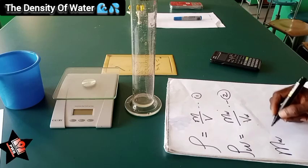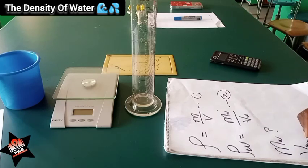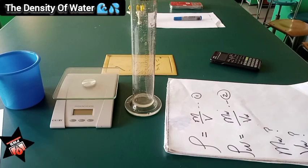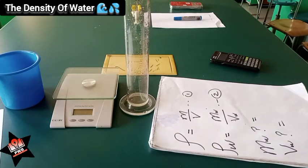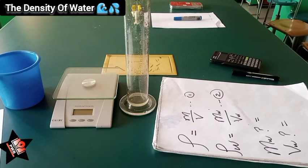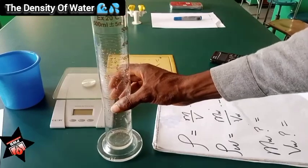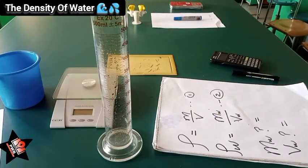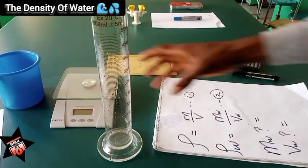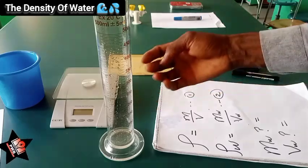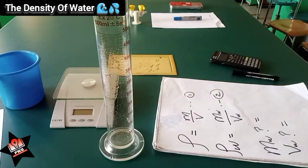Before we find the density of water, we need to find the mass of water and also the volume of water. To find the volume of water is very simple — we just pour the water into the measuring cylinder and wherever it reaches, that is the volume of water. We are going to use arbitrary volumes; any volume you choose is fine — 200, 300, 400, 500, 250, or 350 cm³.